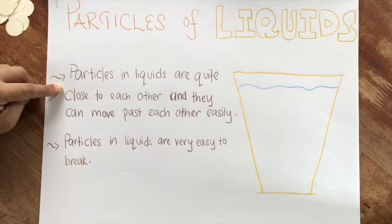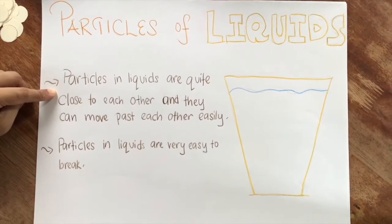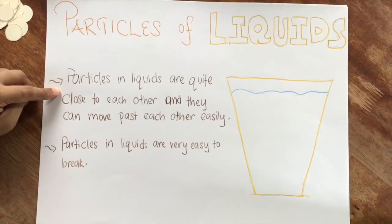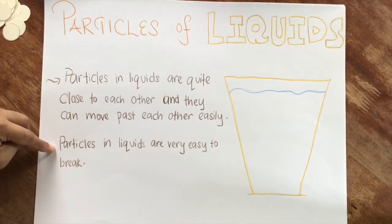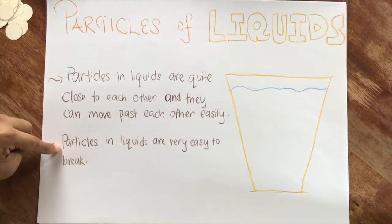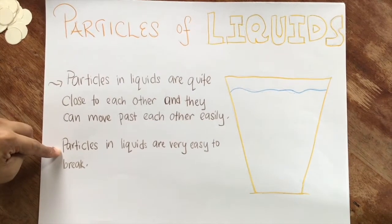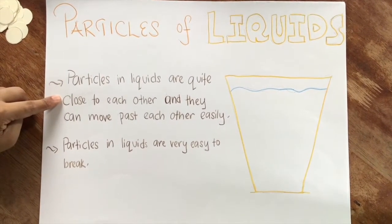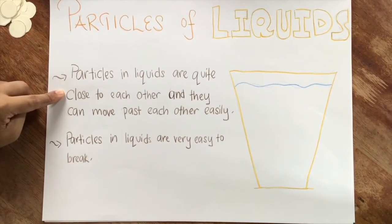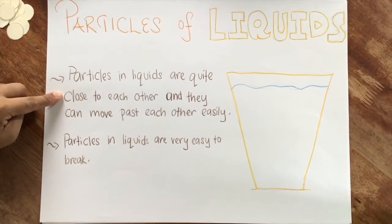Particles in liquids are arranged close to each other and they can move past each other. Particles in liquids are easy to break. Teacher will explain that on our next lesson. For now we will concentrate on particles arranged closely to each other and how they can move past each other.